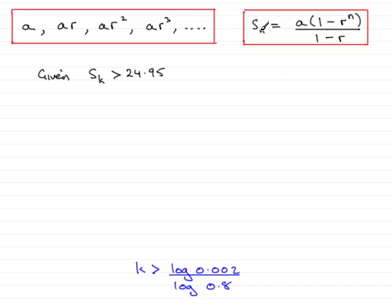So if we let n equal the k, we already know the values for a and r. We can simply substitute our values into this equation and say it's more than 24.95. But remember n is now k. So what we have is a times 1 minus r to the power n. So a was 25, 1 minus the common ratio was 4 fifths, to the power k all over 1 minus the common ratio, 1 minus 4 fifths. And that was greater than 24.95.